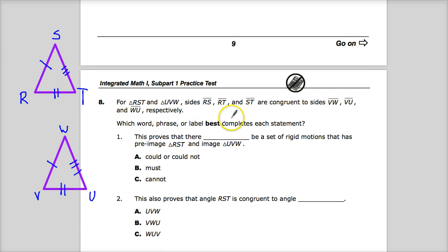So which word, phrase, or label best completes each statement? This proves that there could or could not be a set of rigid motions that has pre-image RST and image UVW. And maybe when you hear that, you're thinking like, say what now?